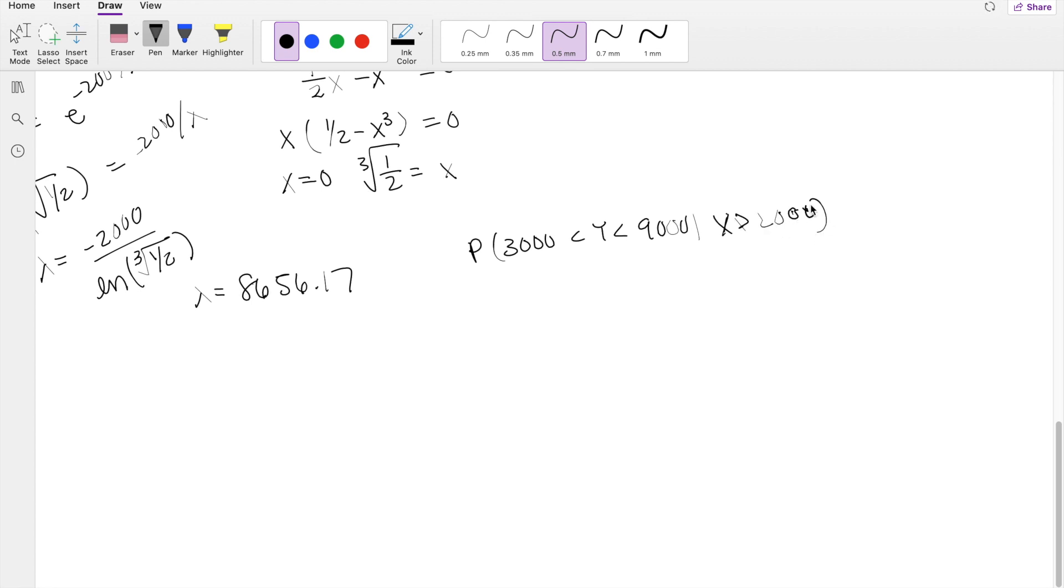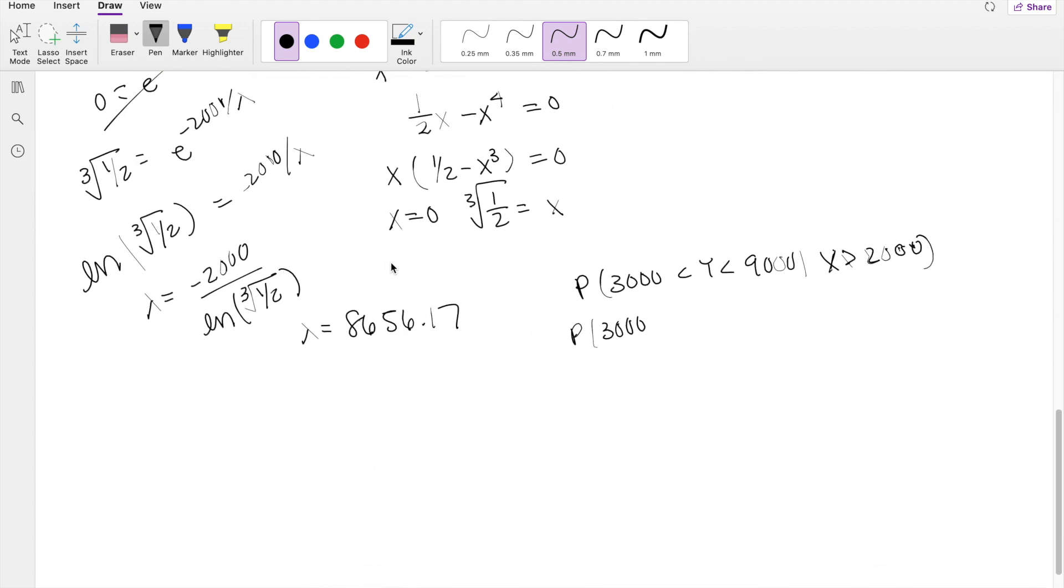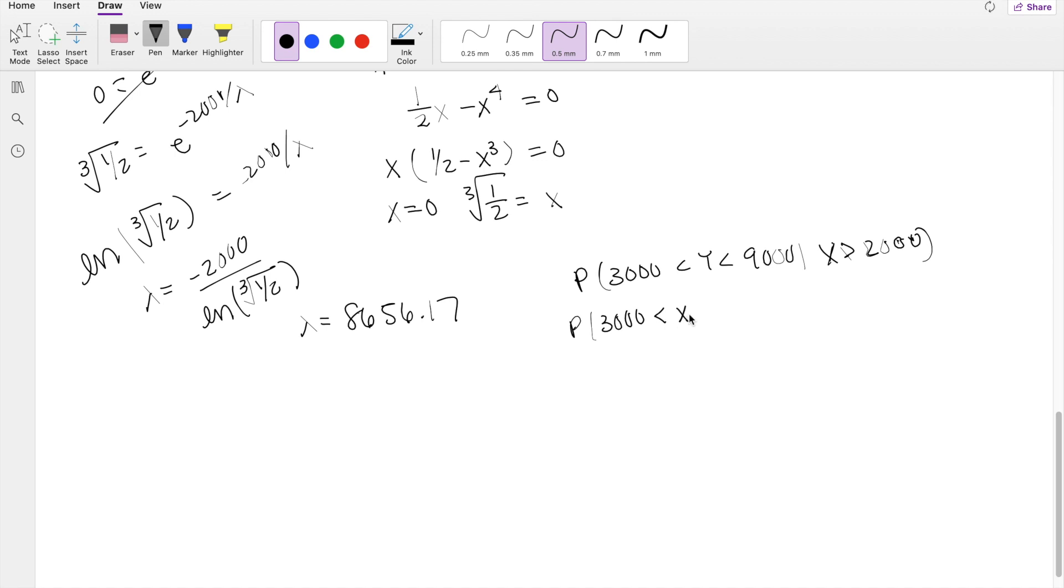My handwriting is dying. And as always, we know Y is the same thing here, is equal to X minus 2,000. So plugging that in here, X minus 2,000, 9,000. And by the conditional probability formula, we know that this comma, the intersection of those two points, divided by the probability that X is greater than 2,000.